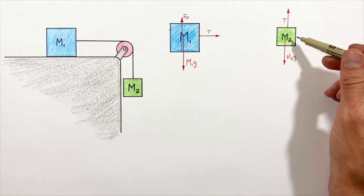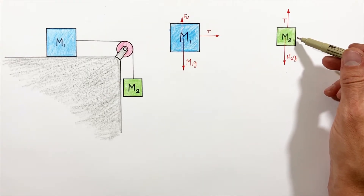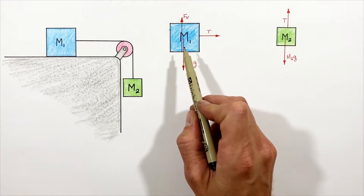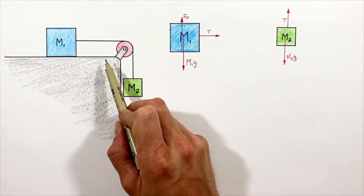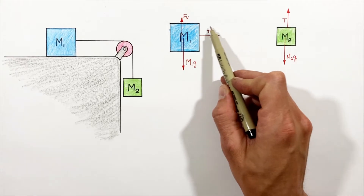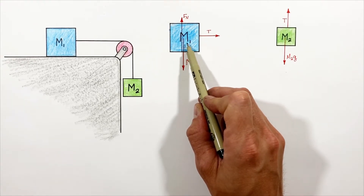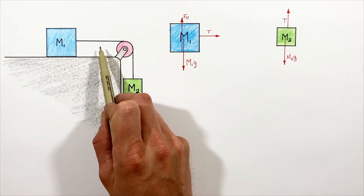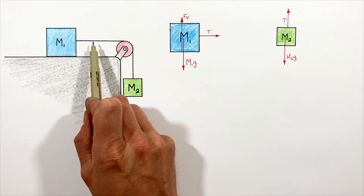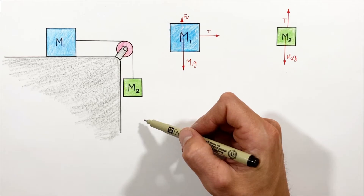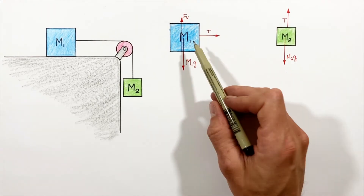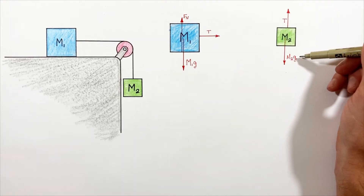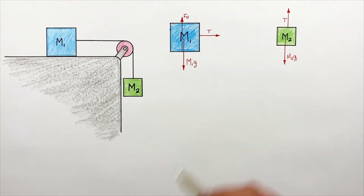Looking at the hanging block, it's tempting to say the tension equals the weight of the hanging block — but it doesn't. If those two forces were equal in magnitude, the net force would be zero and the block would not accelerate. But going back to the block on the table, if there's any tension in the string at all there's an unbalanced horizontal force, so that block will accelerate to the right — and if it accelerates to the right, the hanging block must accelerate downward. So the tension cannot equal the weight of the hanging block.